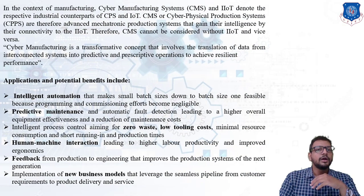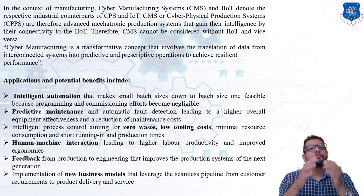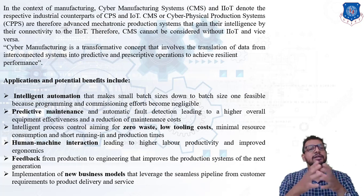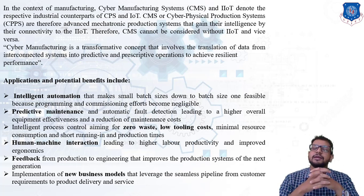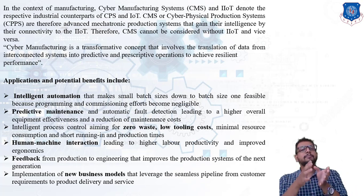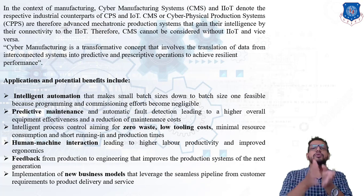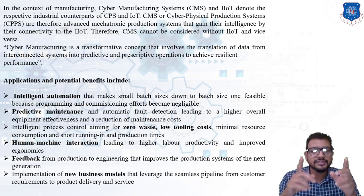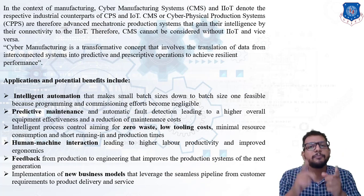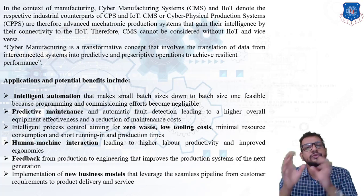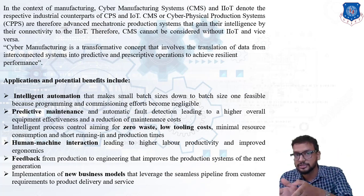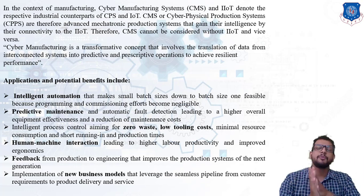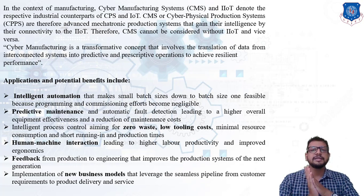In the context of manufacturing, CMS — Cyber Manufacturing System — and IIoT denote the respective industrial counterparts of CPS and IoT. CMS is basically a cyber physical system applied for a production plant — for producing something. It is also called a Cyber Physical Production System (CPPS).